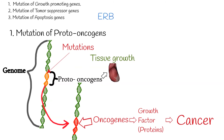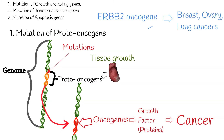For example, amplification of the ERBB2 oncogene causes breast, ovary, and lung cancers. The product of this oncogene is epidermal growth factor receptor.